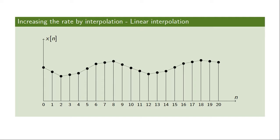In linear interpolation we essentially fill in the blanks by doing weighted averages of neighboring samples. In the case where we increase the rate by a factor of two, we simply fill in the missing sample between every known sample as the average of the two neighboring samples. But there are better ways of doing interpolation — one would be what is called proper interpolation, which we will arrive at in just a moment.